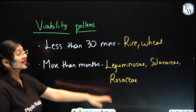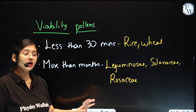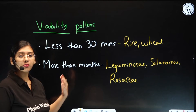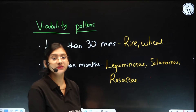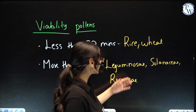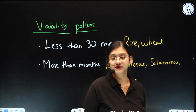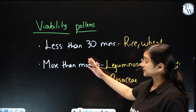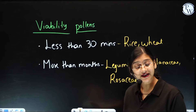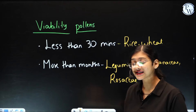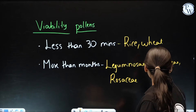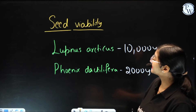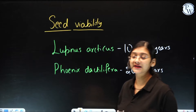The pollen grains of Rosaceae, Leguminosae, and Solanaceae would be viable for more than months. So this is some of the examples for different types of viability that we get to see in pollen grains. And the next is seed viability.